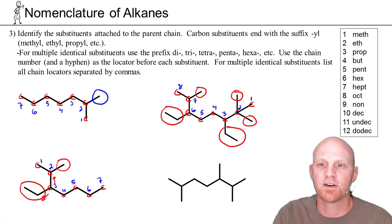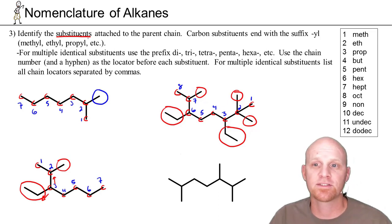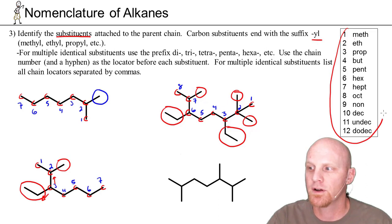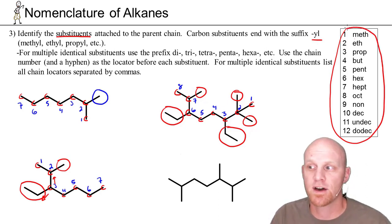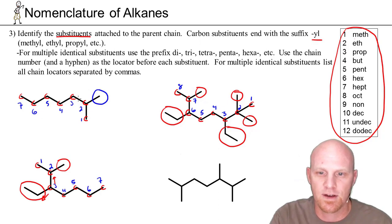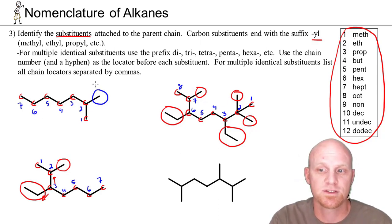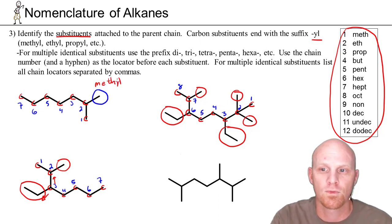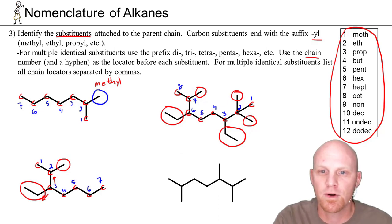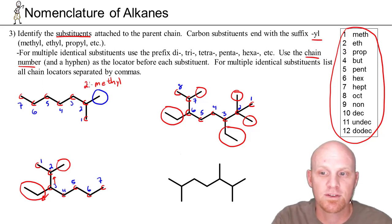Rule number three has us identifying substituents — anything not part of the parent chain. Carbon substituents always end with the suffix -yl and use the same numerical prefixes as before: methyl, ethyl, propyl, butyl, pentyl, hexyl, heptyl, octyl, nonyl, decyl, and so on. We also use a chain locator number with a hyphen before each substituent to indicate where it's attached to the parent chain. In the first example, a one-carbon substituent at carbon two is called 2-methyl.